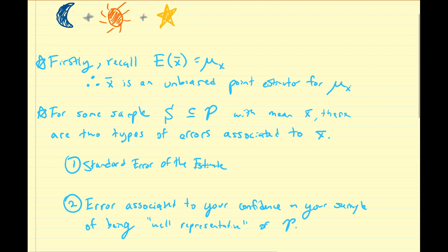Firstly, recall that the expected value for the random variable x-bar is equal to the mean of the distribution. We proved this in a previous video. Since that is the case, x-bar is an unbiased estimator — or unbiased point estimator — for the mean of the population.